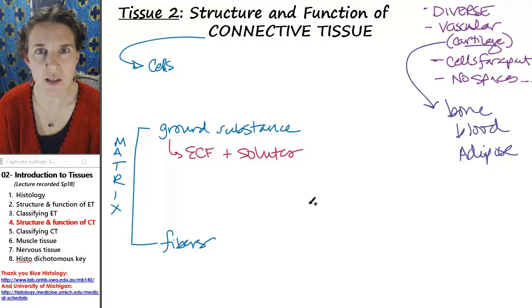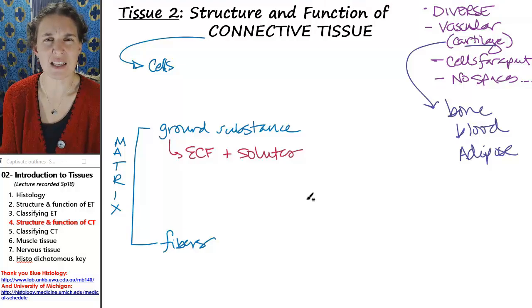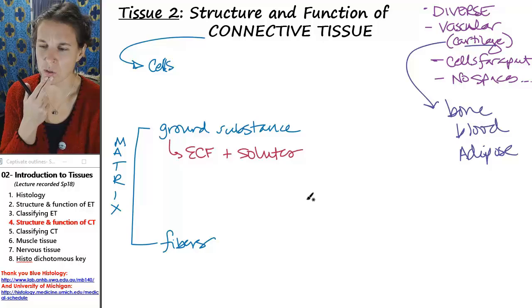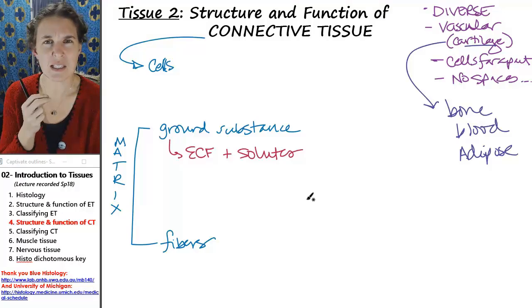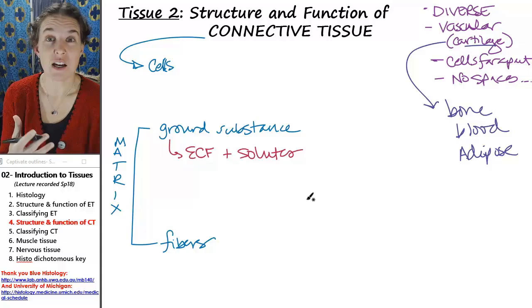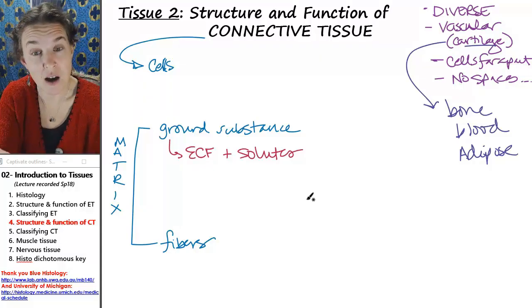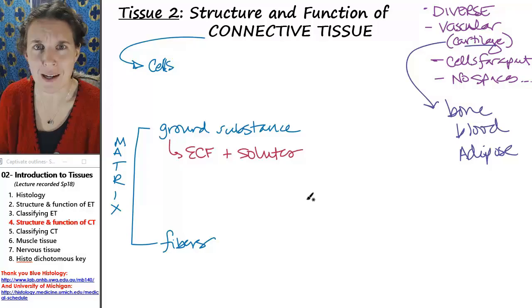Some solutes that are found, peptidoglycans. Have you ever heard of glucosamine? It's a supplement that you can take for joint pain. It's actually a super hydrophilic solute found in the ground substance of connective tissues, like cartilage.